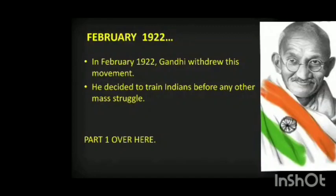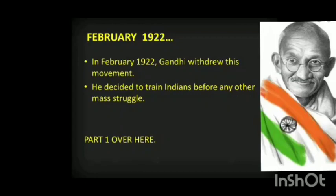In February 1922, Gandhiji called off and withdrew the Non-Cooperation Movement. The main reason for withdrawing was the Chauri Chaura incident in Gorakhpur, UP, where the movement turned violent and a police station was burned down, killing 22 policemen. So Gandhiji decided to stop the movement.